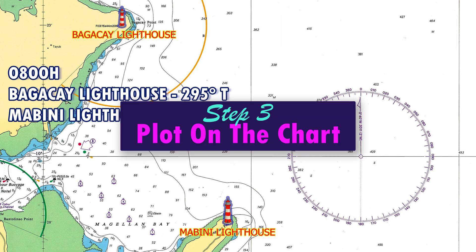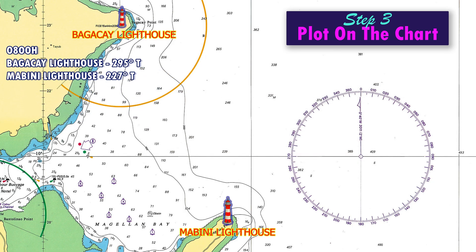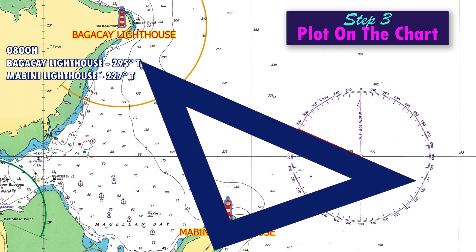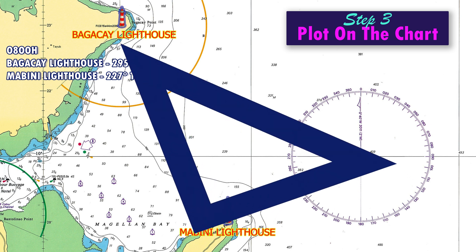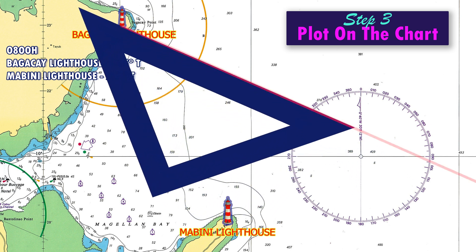Step 3: Plot on the chart. On the chart, place your parallel ruler or triangle at each object and draw a line along the true bearing toward your vessel's position. First, plot the bearing of Bagakei Lighthouse. Look for 295 degrees on your compass rose, align the ruler, drag it to the lighthouse, then draw a line.